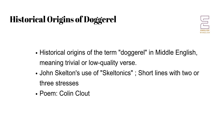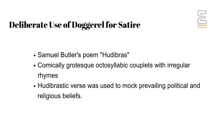One early example of intentional Dogrel is found in the works of John Skelton, a 15th-century poet known for his use of Skeletonics. Skeletonics are short lines with two or three stresses, intentionally rough and variable in meter, as exemplified in his poem Colin Clout. Skelton employed this form to create a distinct and lively style that emphasized satire and humor.